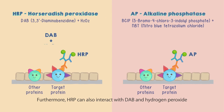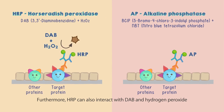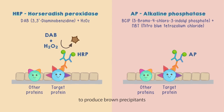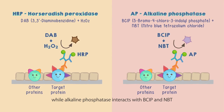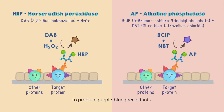Furthermore, HRP can also interact with DAB and hydrogen peroxide to produce brown precipitants, while alkaline phosphatase interacts with BCIP and NBT to produce purple-blue precipitants.